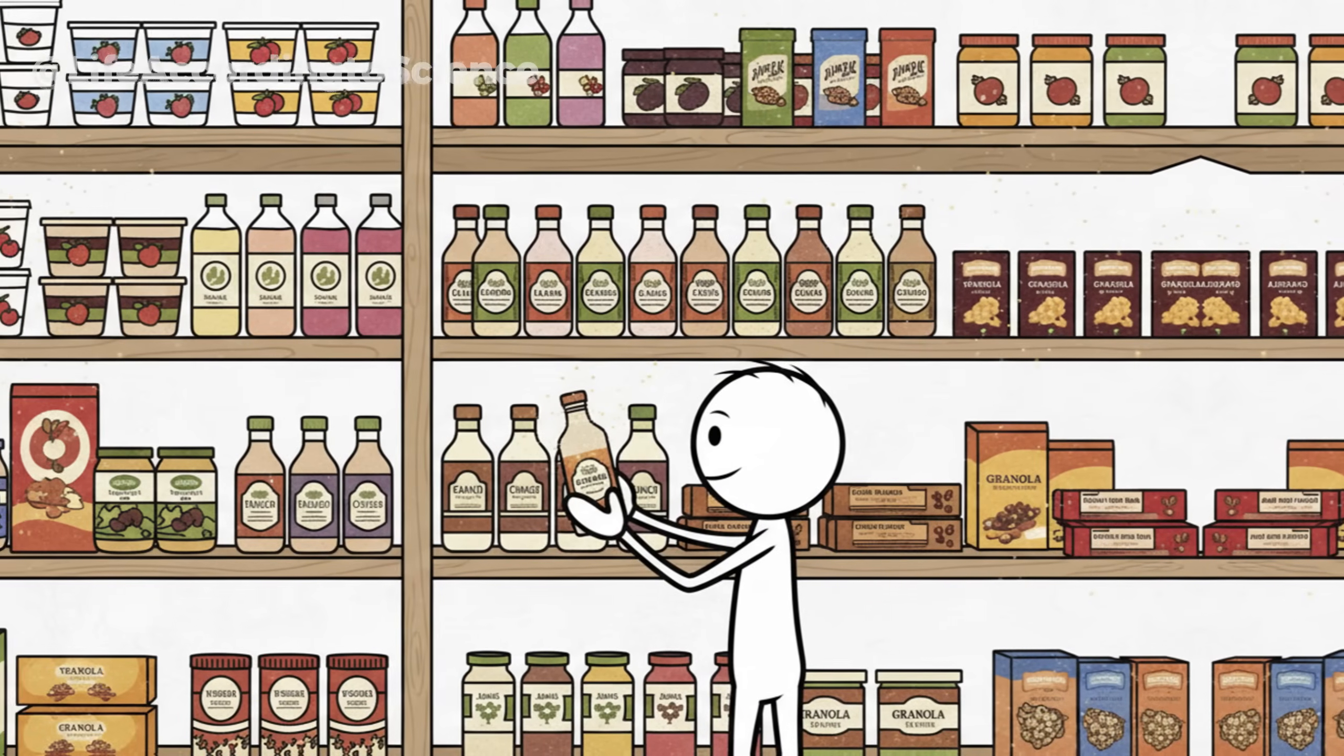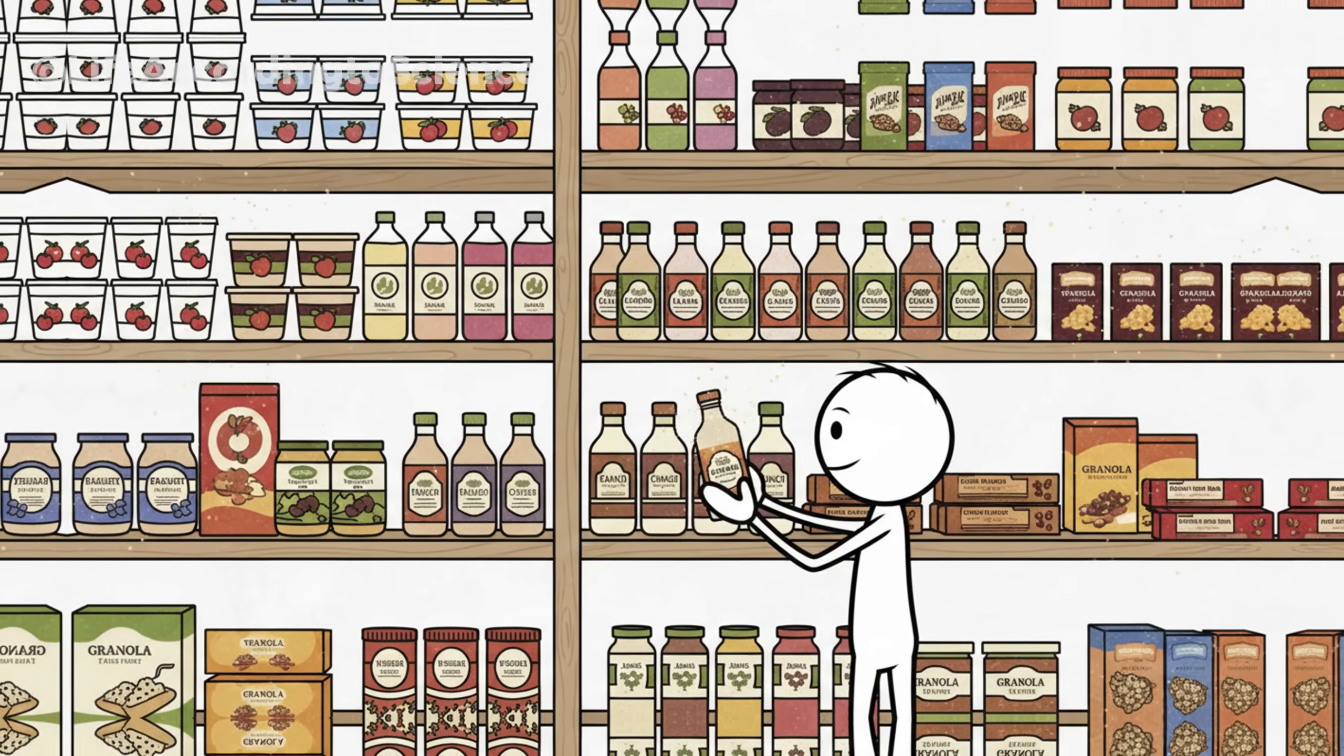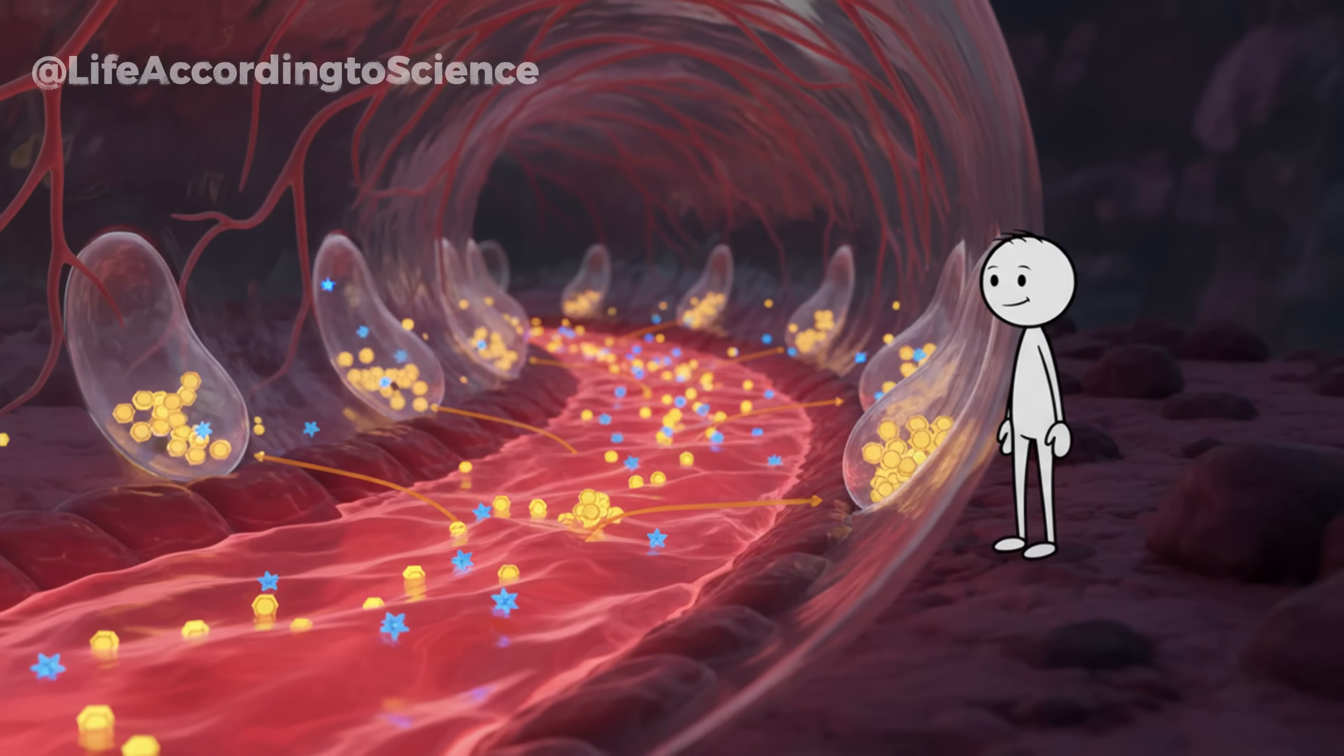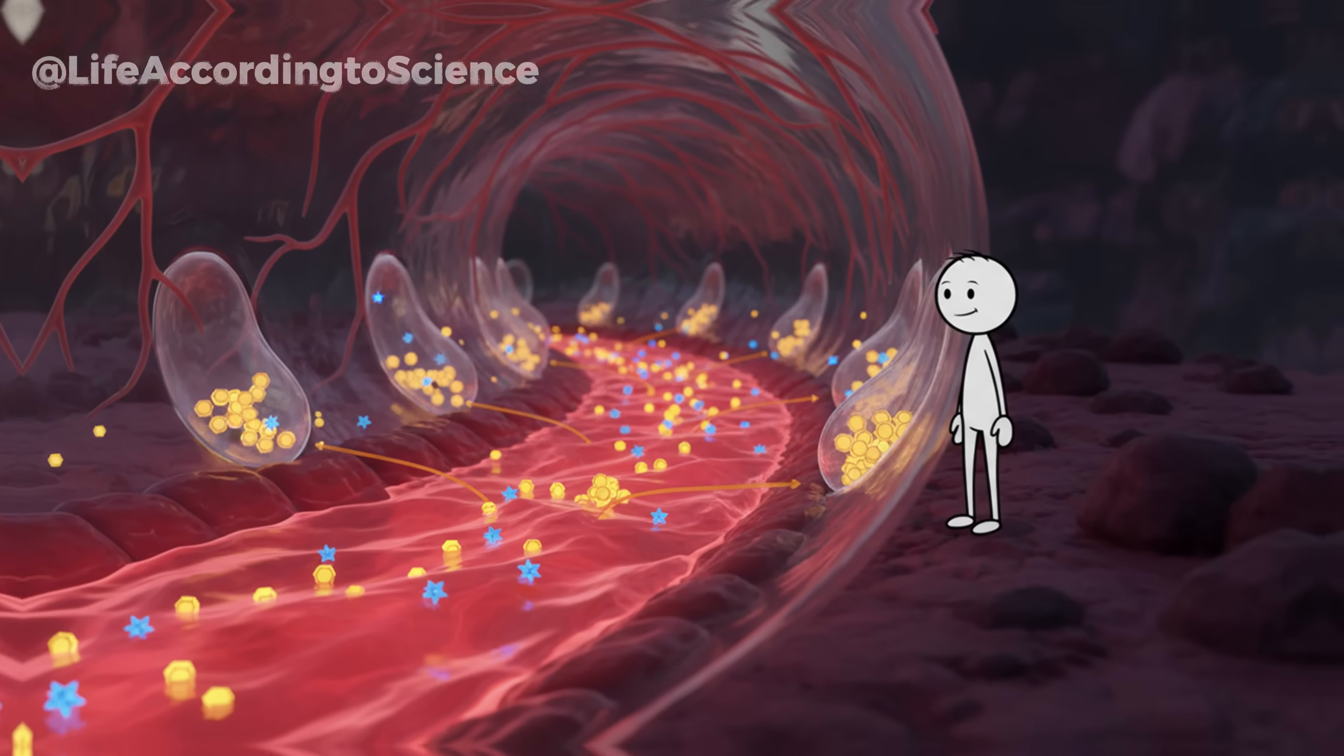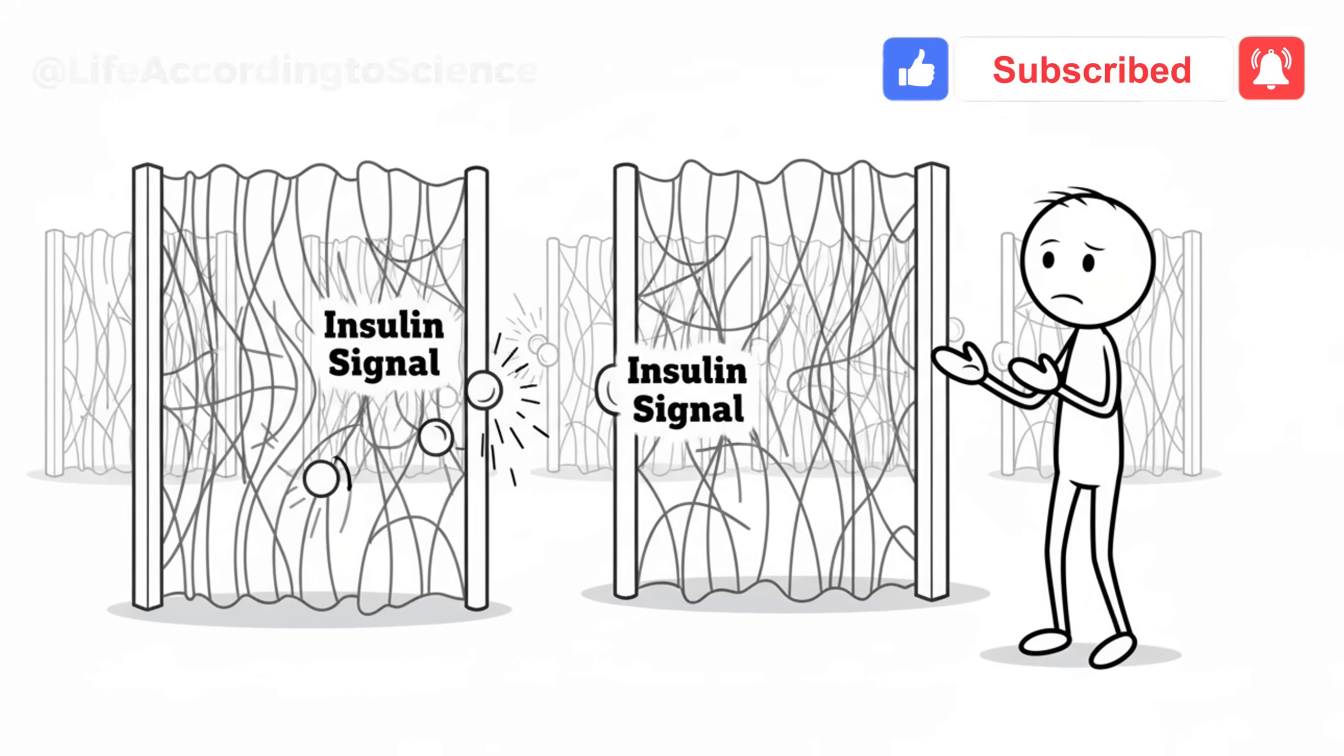Here's a hard truth. Sugar hides in plain sight. You might think you've cut it out, but it lurks everywhere, in yogurt, sauces, protein bars, and healthy drinks. Every time you consume these hidden sugars, your blood glucose spikes, insulin floods your bloodstream, and your body gets a clear message. Store fat, not burn it.